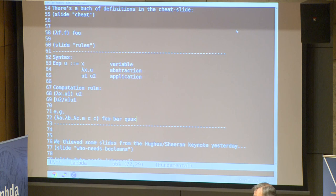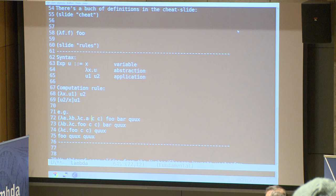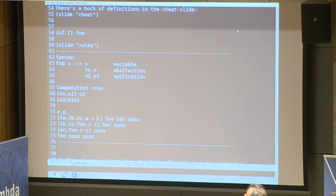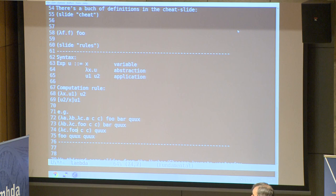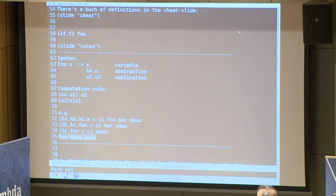Here's a simple example: lambda a, lambda b, lambda c — we can think of it as a function taking three arguments, but in reality it's single-argument functions. We pass foo into the first lambda and replace all the a's with foo. Then we pass bar into b — but there are no b's, so nothing happens, we just strip off the lambda b bit. Then we pass quarks into lambda c, so all the c's are replaced with quarks. And we're done — it evaluates down to this expression, which is equivalent to what we started with.